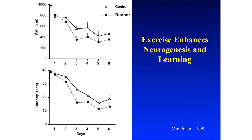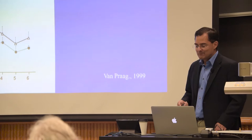They next tested how smart these animals were. Using what's called a Morris water maze — literally mice in a maze — they tracked how long it took animals to navigate through. Control animals improved every day. But animals that had the ability to exercise learned faster. So there's a correlation between exercise or environmental enrichment, the birth of new neurons in the brain, and how smart a mouse is, at least.